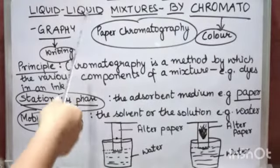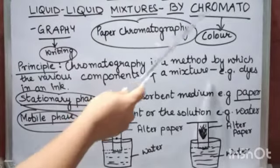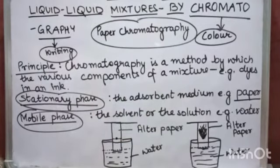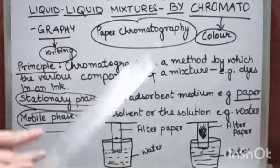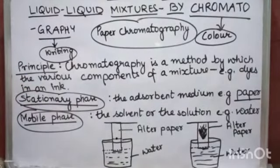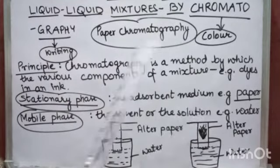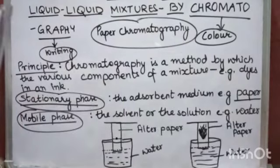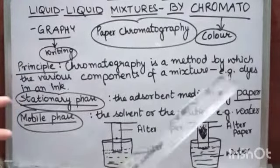To separate liquid-liquid complex mixtures, chromatography is used. Note that in some books it is incorrectly written as solid-liquid — it should be liquid-liquid complex mixtures. Chroma means color and graphy means writing. This method is used to find various components of a mixture, for example dyes in an ink. The principle is based on separating the various components of a mixture using paper as the stationary phase and a solvent as the mobile phase.